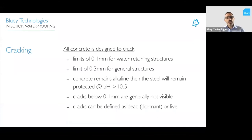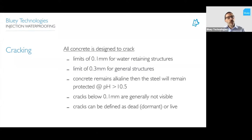There are usually limits on the amount of cracking. For water-retaining structures, we might have a limit of 0.1 mm crack width. For general structures, 0.3 mm — and even with that crack, you're still maintaining an alkaline environment around the steel, protecting it from corrosion. As long as the pH remains above about 10.5, the steel won't corrode, and as long as we're not replenishing oxygen and water into that crack. Cracks below 0.1 mm are generally not visible. Cracks can also be defined as either dead or live.